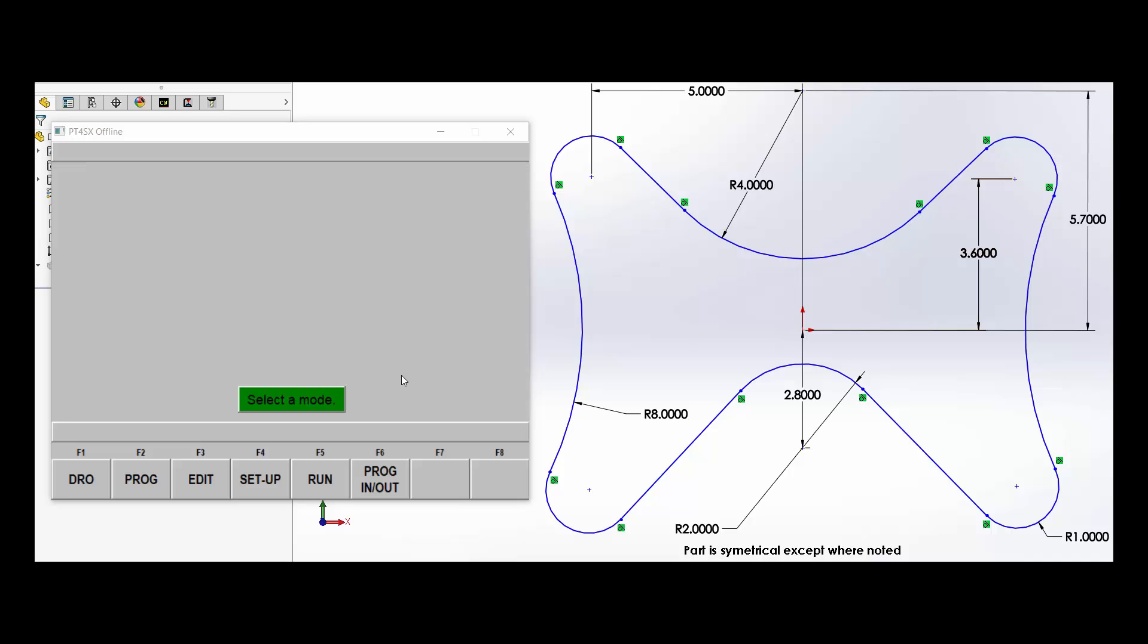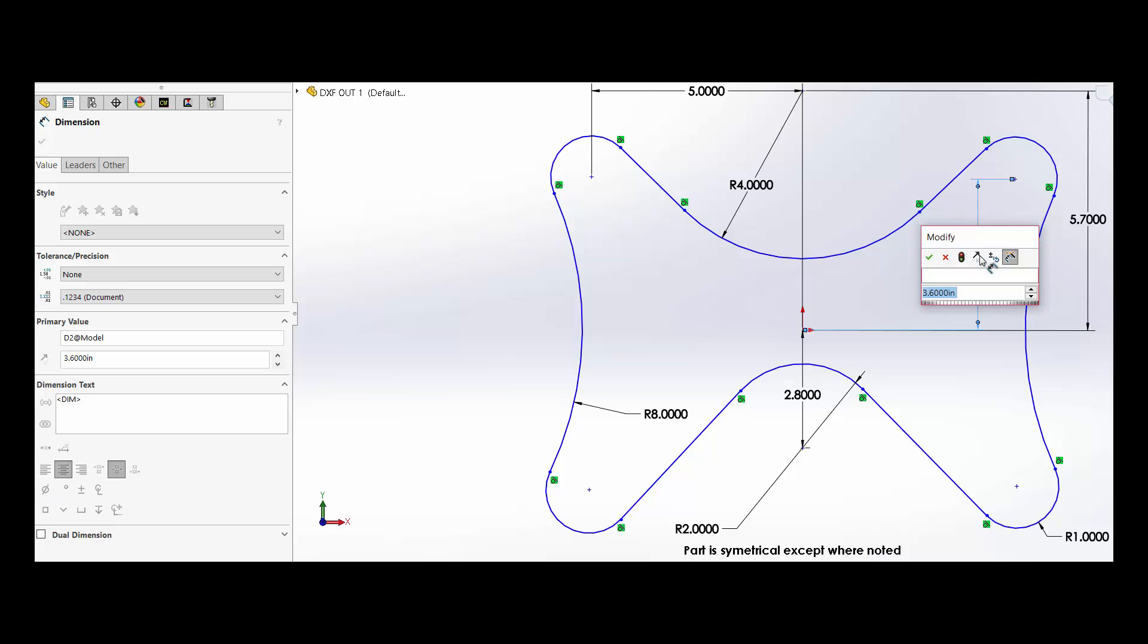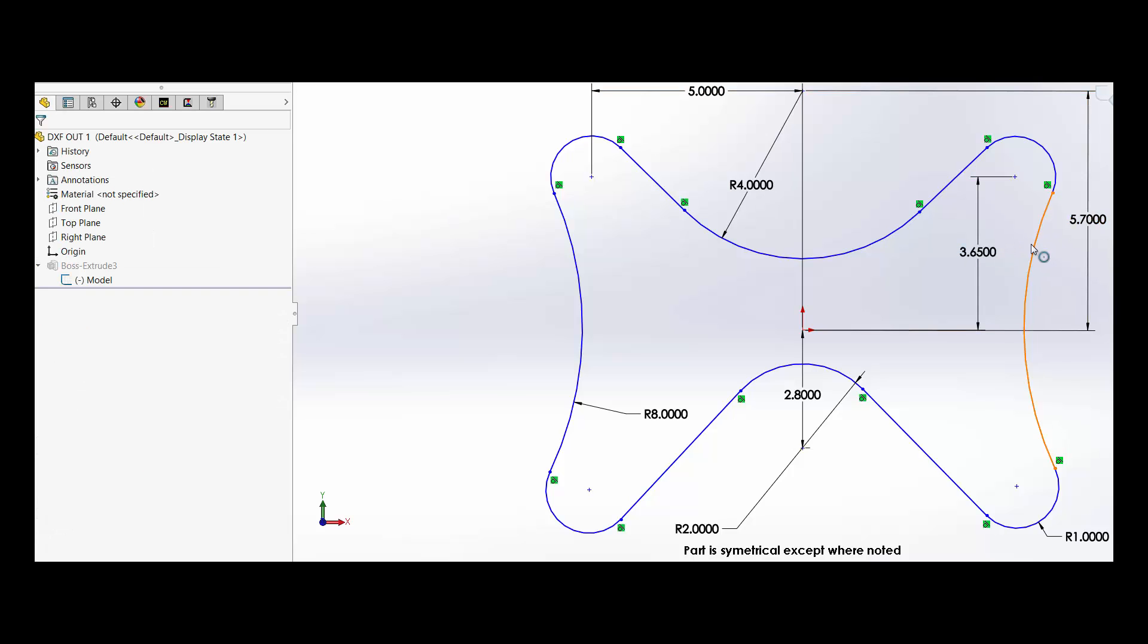Let's say I've already machined the part but an engineering change comes along and the engineer says, oh for whatever reason, that's got to be three inches 650. So now he sent you another print showing you this.